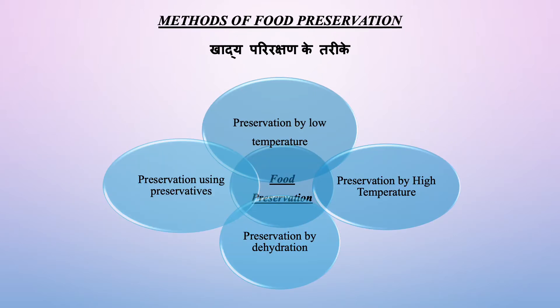Talking about the methods of food preservation — khadye parirakshan ke tarikaya — preservation of food can be done by various methods such as preservation by low temperature (thandi vidhi dwara ahar sarakshan), preservation by high temperature (taap dwara sarakshan), preservation by dehydration (nirjali karan arthaad bhojye padartho ko sukha kar sarakshan), and preservation using preservatives (parirakshak padartho dwara sarakshan).